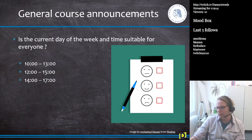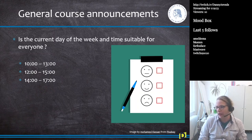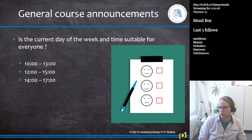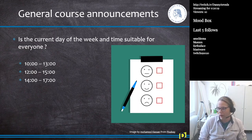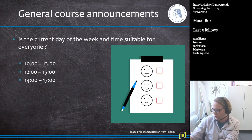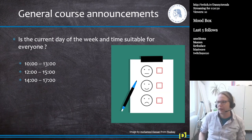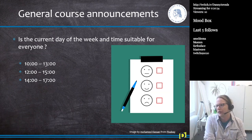It looks like people prefer option two, from 12:00 to 15:00, and that works for me — I can have lunch an hour earlier. So the next lectures will all be from 12:00 to 15:00. However, someone says they have class from 9:00 to 13:00, so perhaps we move it one hour to 13:00–16:00.